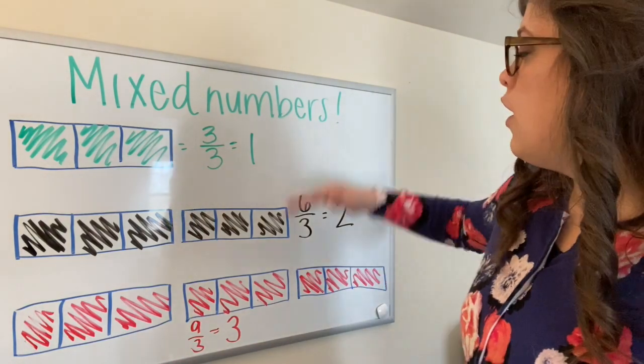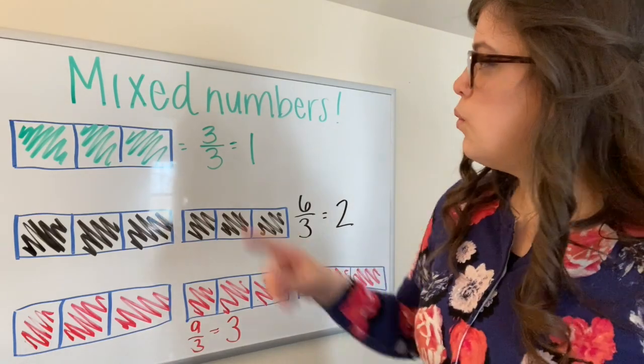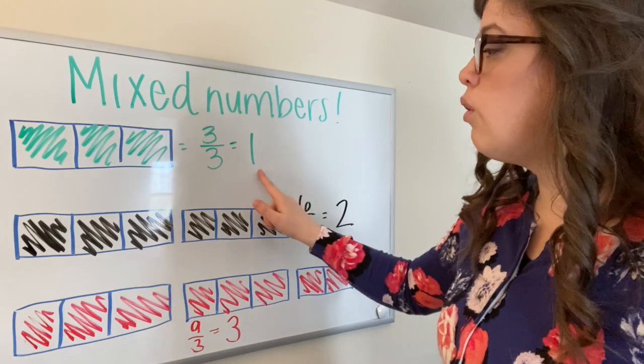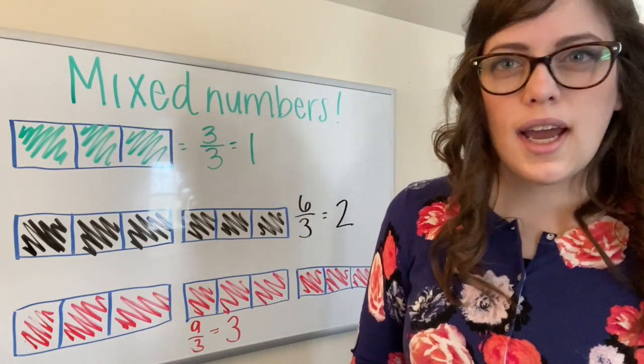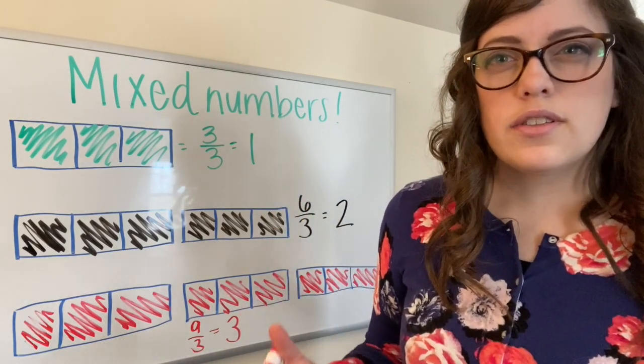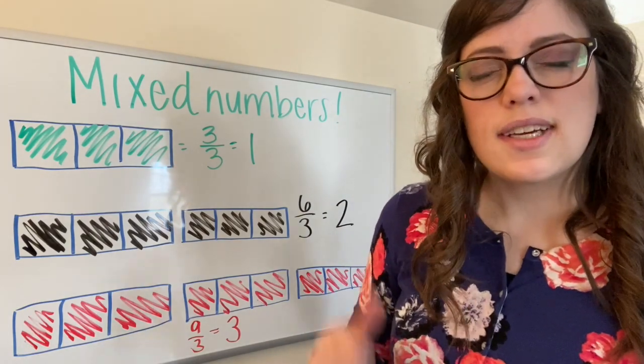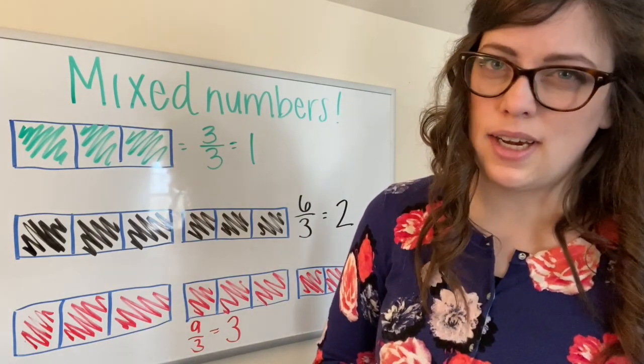Now, all of these are examples where the number colored in is equal to a whole number. But what happens when our answer is somewhere in between one and two or two and three? Let's take a look at another example now.